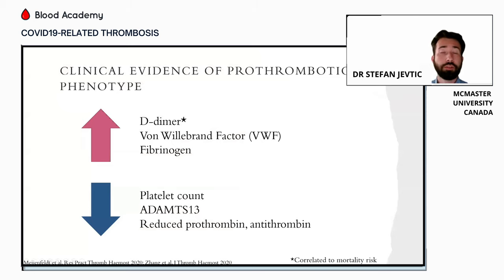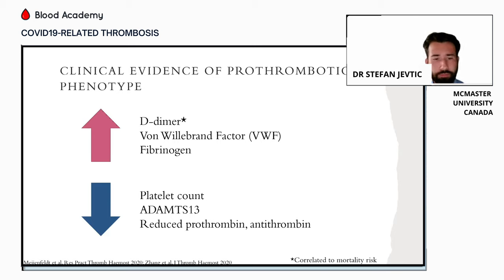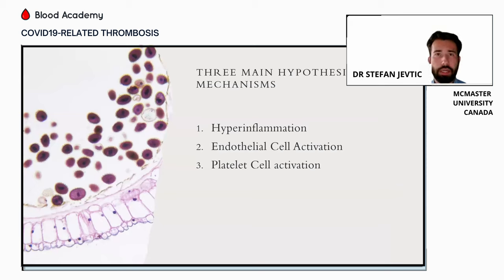Evidence for a prothrombotic phenotype was also seen clinically. Patients often had an elevated D-dimer greater than two times the upper limit of normal, and many studies showed you could risk-stratify patients based on the degree of D-dimer elevation, with higher elevation portending poorer prognosis. These patients also had increased von Willebrand factor and increased fibrinogen, suggesting a hyperinflammatory state. Many also presented with mild thrombocytopenia, reduced ADAMTS-13 levels, and reduced prothrombin and antithrombin — altogether pointing to a prothrombotic disorder above and beyond any regular viral infection.